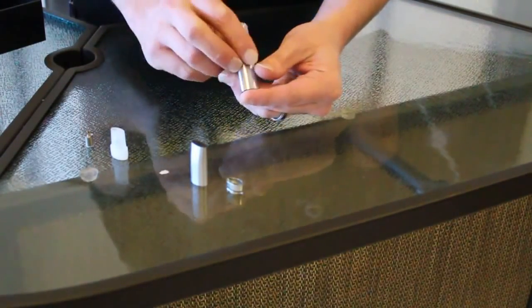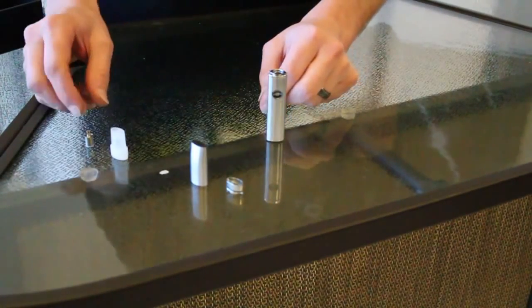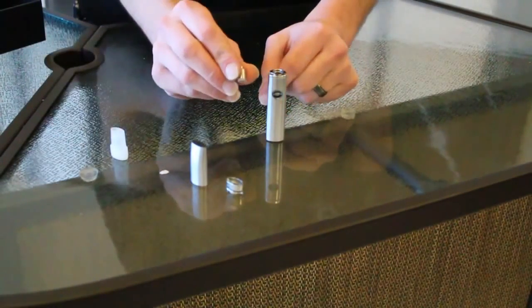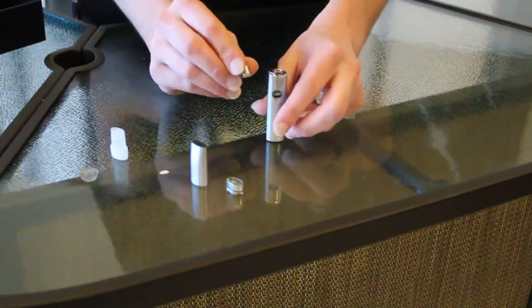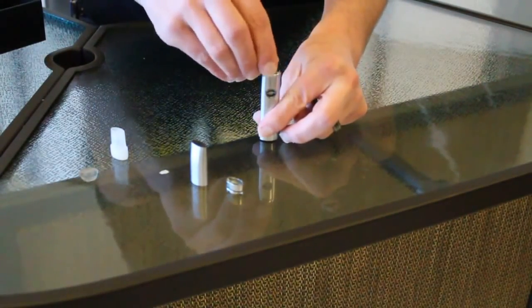Now the battery's turned on, and we can move on to the atomizer. The atomizer's the part that actually vaporizes the liquid, and the atomizer sits right inside the battery.